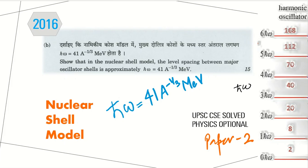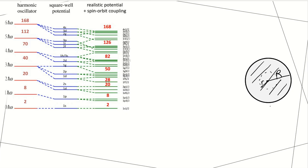Hello everyone. In today's video we will be seeing this question from the year 2016. In this question we have to show that in the nuclear shell model, the level spacing between the major oscillator shells is approximately 41 A to the power minus 1/3 MeV. Here on the right hand side you can see the major oscillator shells, which all have constant spacing of ħω. So we have to show that ħω equals 41 A^(-1/3) MeV, meaning it depends upon the mass number of the nucleus.